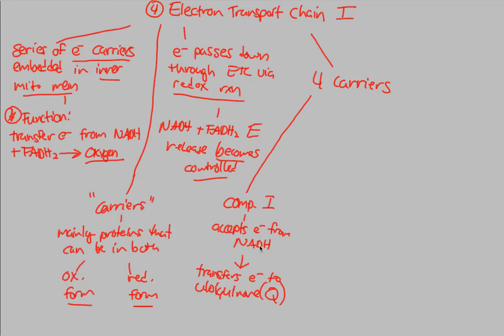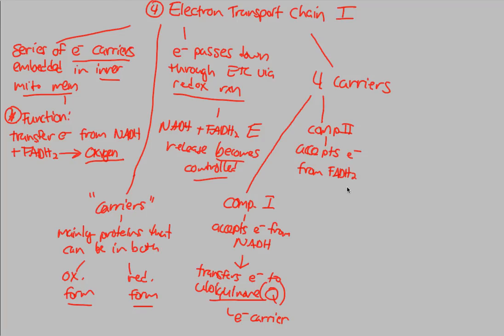Complex II and ubiquinone — all that ubiquinone is, is an electron carrier. Once ubiquinone has an electron from NADH, it has the ability to go to another complex. Complex II is actually interesting because it accepts electrons not from NADH, but from FADH2. It's easy to remember: FADH2 goes to Complex II. And then this is also transferred to ubiquinone — Complex II also transfers its electron to ubiquinone.